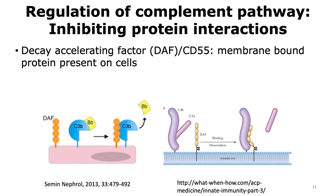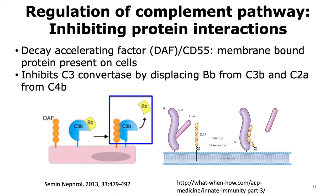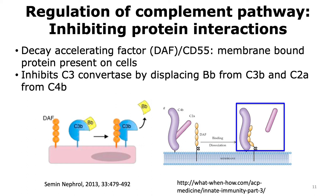Another way to disable the complement pathway is to inhibit protein-protein interactions. The protein called decay accelerating factor, or CD55, is a membrane-bound complement regulatory protein synthesized by host cells. The decay accelerating factor is able to inhibit C3 convertase activity by displacing Bb from C3B, and it also displaces C2A from the C4B complement fragment. By doing so, it prevents the interaction of C2A with C4B or Bb with C3B, and hence disables C3 convertase activity.